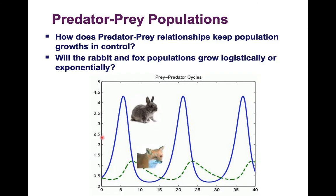Let's look at predator-prey populations using this graph, and see if you can answer the two questions in your note taker. The first question is: how do predator-prey relationships keep population growth in control? Here we see the rabbit population going up and down, fluctuating around its carrying capacity at a steady state, and the fox population doing the same.